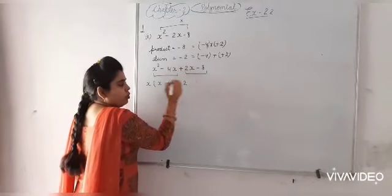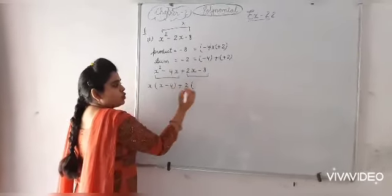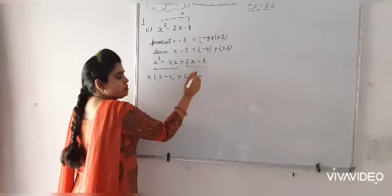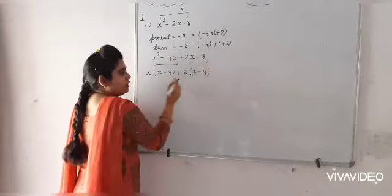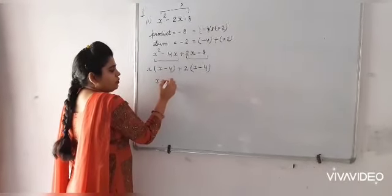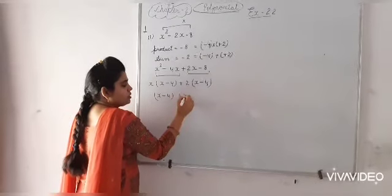2 is common. By taking 2 as common, what will be left? x plus minus minus 2, 4 is 8. These two brackets should be same: x minus 4 and x plus 2.